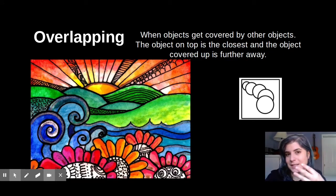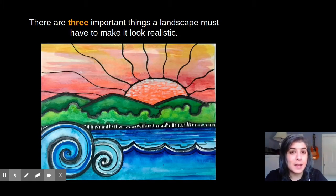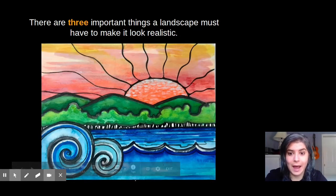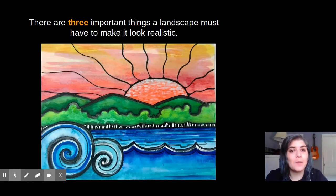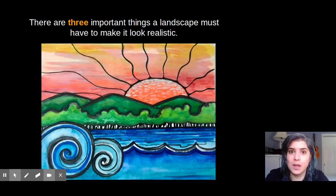Now that we know the three things that make up space, we need to know the three most important parts of a landscape. Robin Mead makes landscapes, but she also creates what are called seascapes. A seascape is a landscape that has the sea in it. You could also make a cityscape like we did last year — a cityscape is a landscape with a city in it. Let's go over those three most important parts of a landscape.